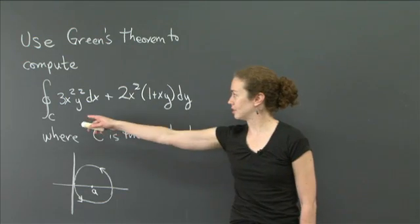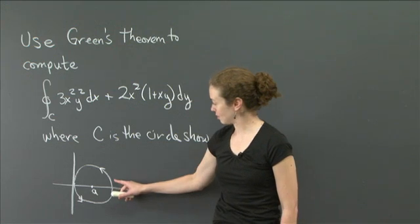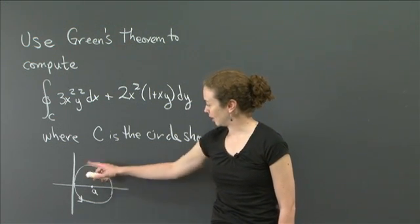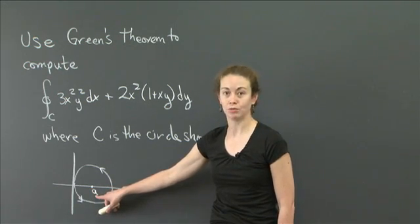It's the integral over the curve C, where C is the circle drawn here. The circle is oriented so the interior is on the left, and it's centered at the point x equals a, y equals 0.